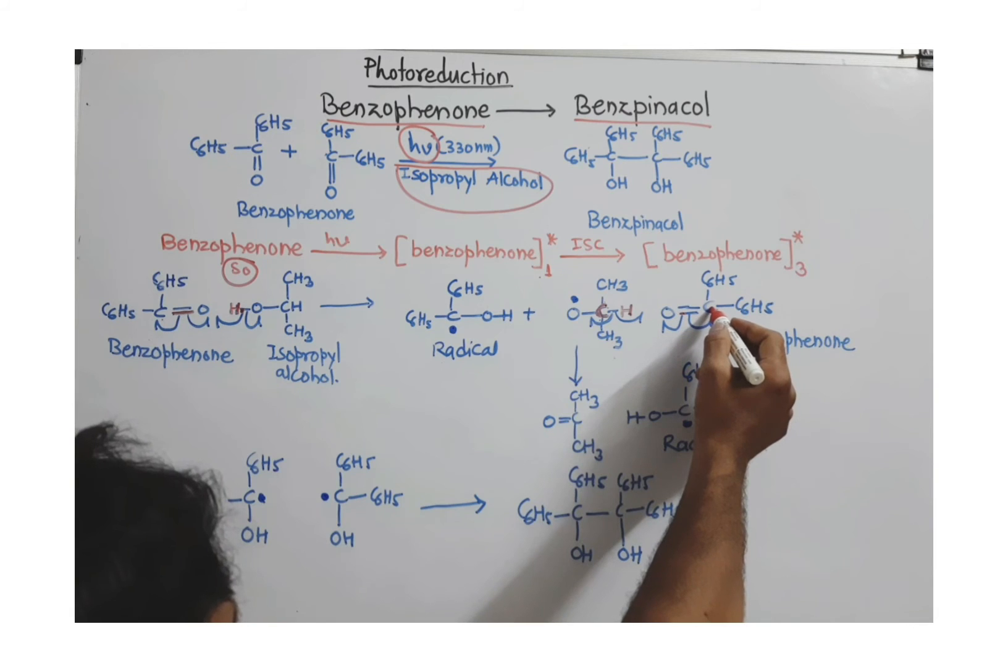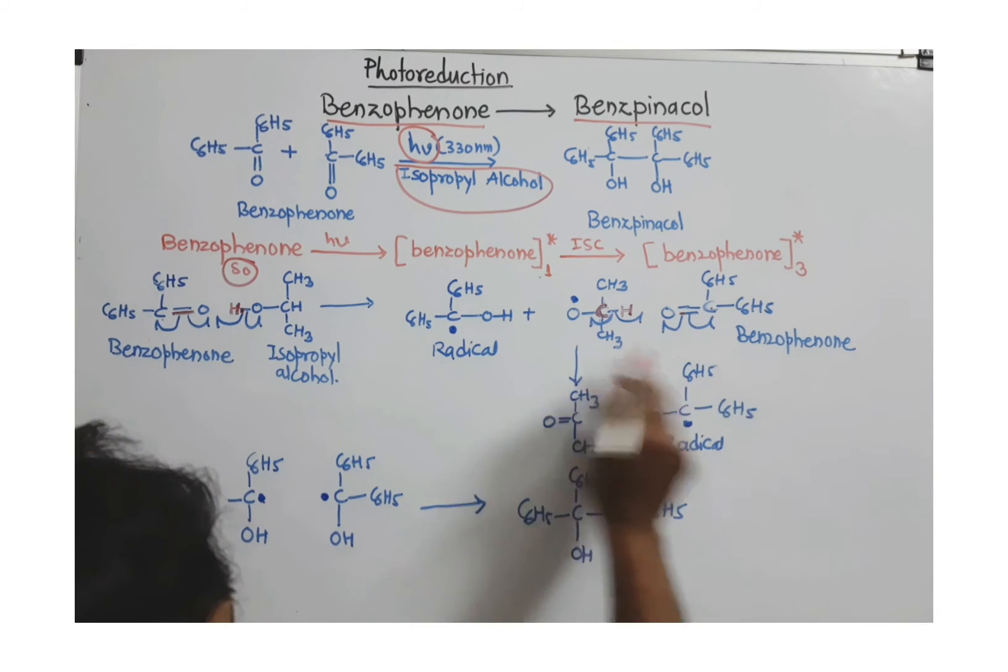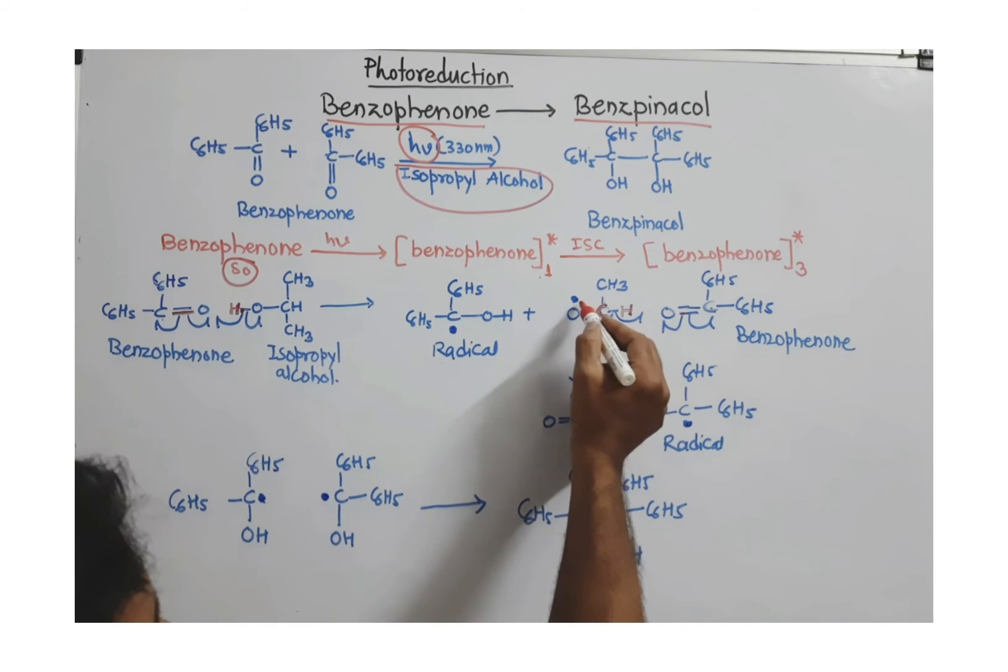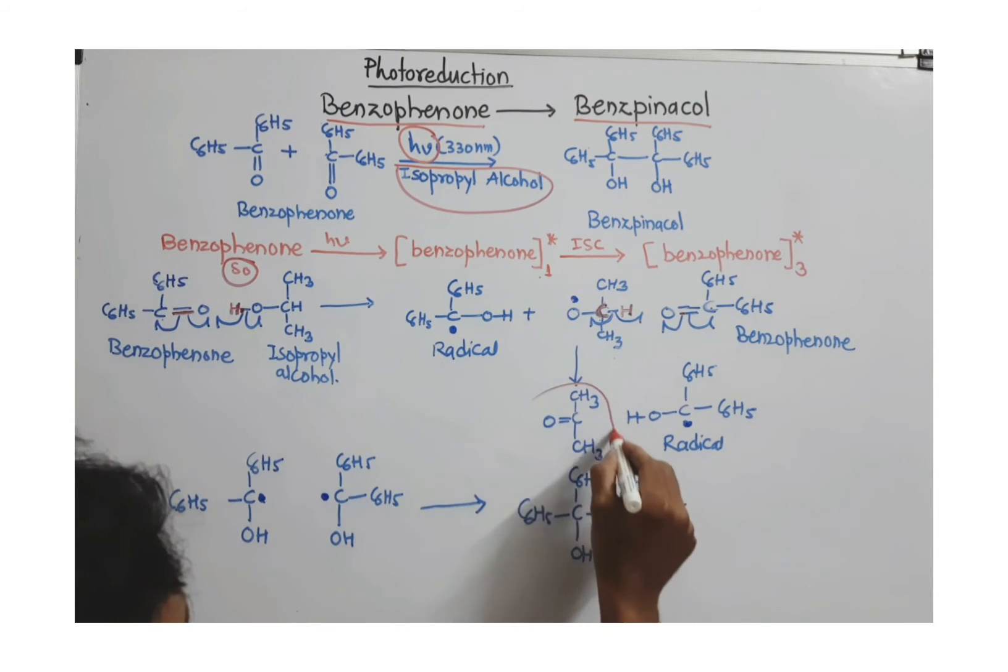So one electron will go to this carbonyl carbon to get the similar radical and these two electrons, one is from oxygen and one is from this bond, actually forming double bond, pi bond between oxygen and carbon to get this ketone.